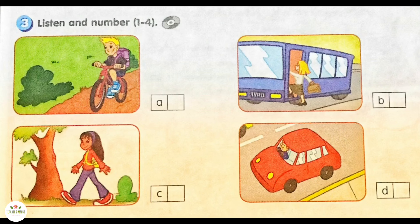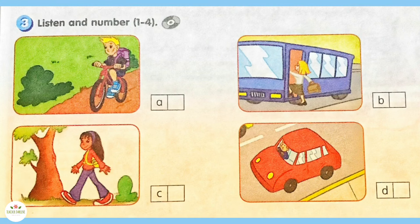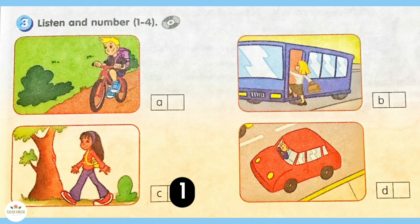Activity 3. Listen and number 1 to 4. 1. Does Mona always walk to school? Yes, she does. She always walks to school. 2. Does Ryan take the bus to school? No, he doesn't. He always rides his bike to school.